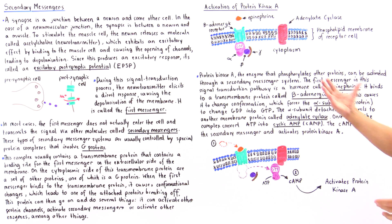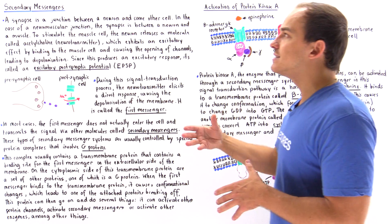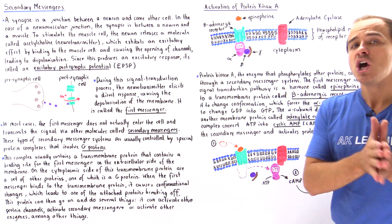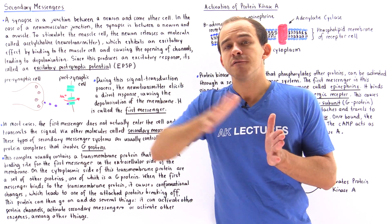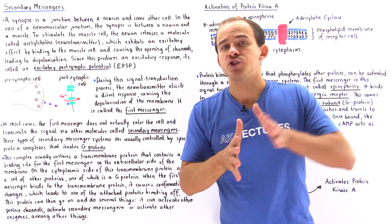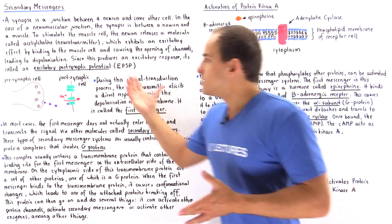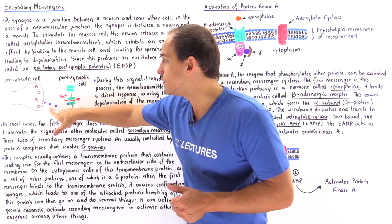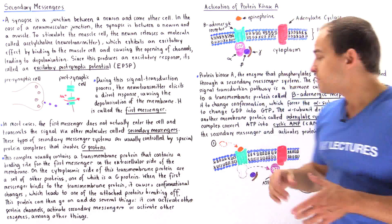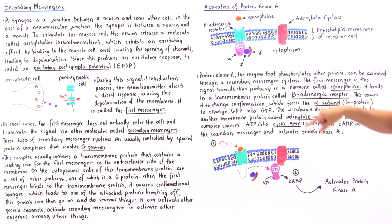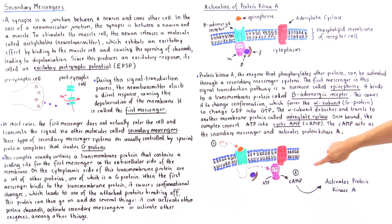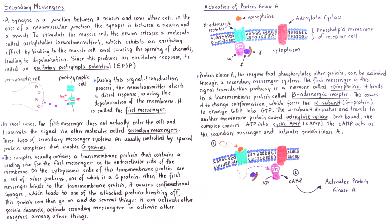This is one specific example of a secondary messenger pathway — the pathway by which we pass down signals from one cell to another. In the neuromuscular junction pathway, we had only one intermediate molecule: the neurotransmitter. In the epinephrine pathway, we had two: epinephrine as the first messenger and cyclic AMP as the secondary messenger.